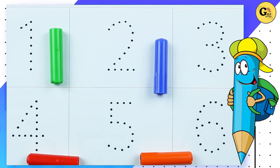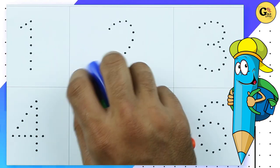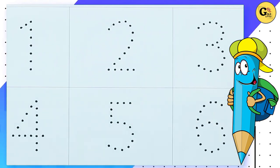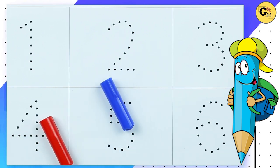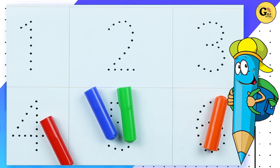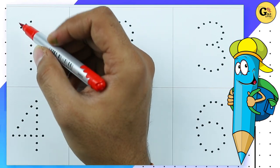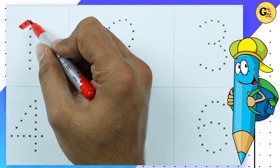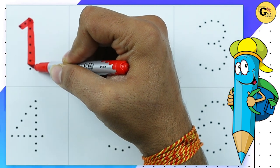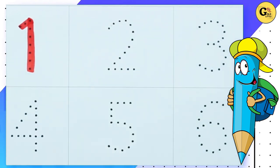Hello friends! Today we learn numbers 1 to 10 with some colors: red color, blue color, green color, orange color. Let's start! How to write numbers 1 to 10. It's number one — yes, number one with red color.